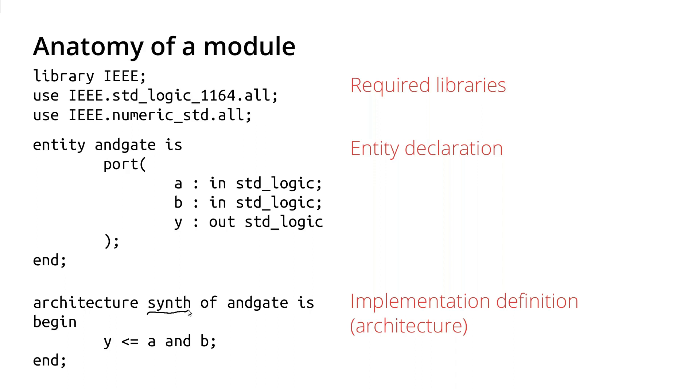If I was doing something that was only for simulation, I might pick sim or whatever. VHDL is a little unusual in that it allows you to specify multiple implementations for the same entity. This is sort of like saying I've got one particular function definition and I'm going to have multiple implementations of that function.